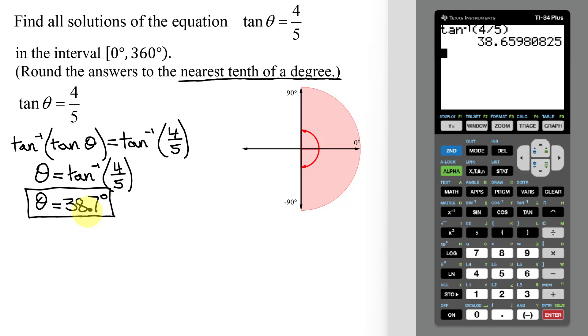Now this angle here is in quadrant one. So if I drew it in, it would look something like this. So this is my 38.7 degrees. This angle right there, rotating in a positive direction.